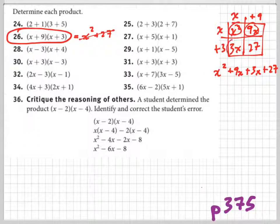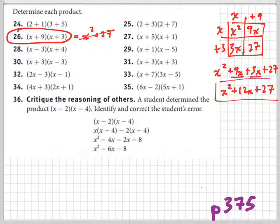Now there's like terms, right? We have two x terms. How many total x's do we have? So you should have x squared plus 12x plus 27. That's your answer.